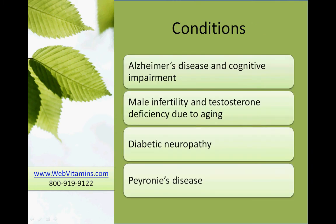Conditions that are frequently thought of when treated with Acetyl L-Carnitine include Alzheimer's disease and cognitive impairment. Also, male infertility and testosterone deficiency due to aging can be treated with Acetyl L-Carnitine, usually combined with a little L-Carnitine. Also, Acetyl L-Carnitine has been used for patients with diabetic neuropathy and also Peyronie's disease.